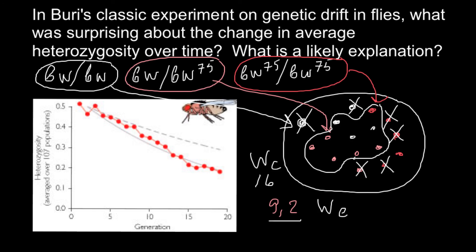Effective population size can also be affected by family size — some flies may have more progeny than others. Ideally we count as if every male and female has an equal number of offspring, but in real life some individuals have more progeny, some don't participate in breeding at all, and some males may have more mates than others. All of this affects effective population size and must be taken into account.